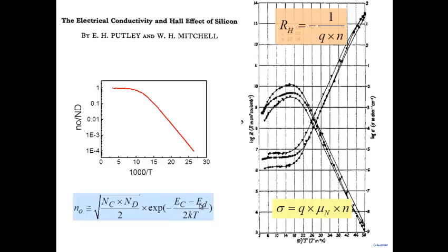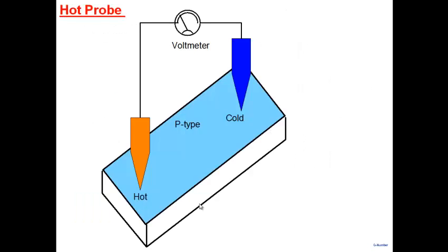Through these measurements — Hall coefficient, conductivity as a function of temperature — we obtain three things: electron density, mobility, and the positions of donor or acceptor levels. Another very simple experiment is the hot probe experiment: you have a semiconductor sample, one probe is heated (e.g., a soldering iron) and the other is a cold normal probe. You measure the voltage between them. If they're at the same temperature, no voltage; but if one is hot and the other cold, a voltage develops.